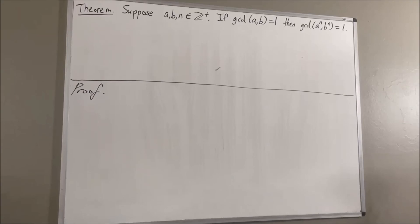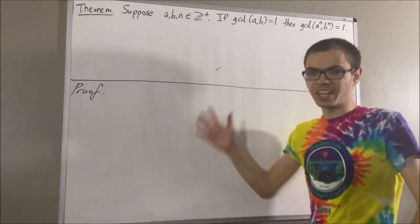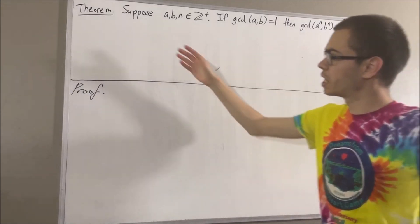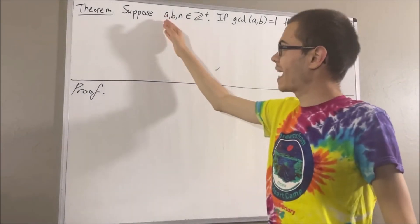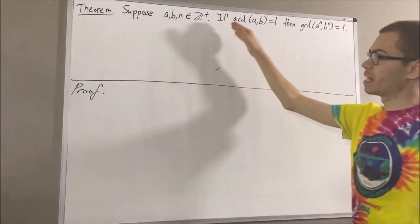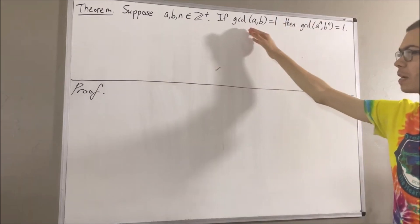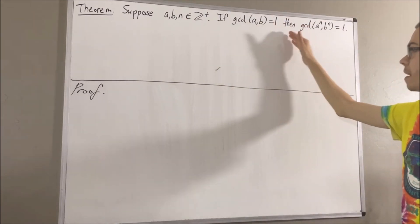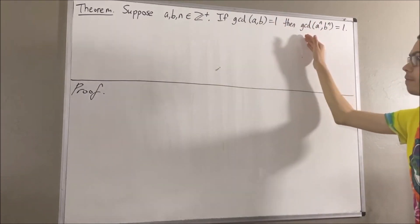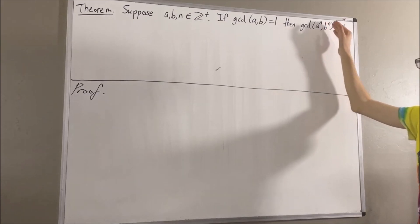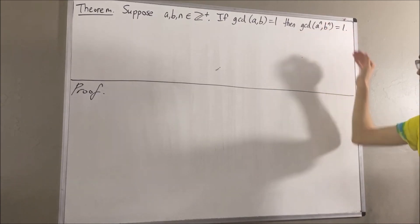Hello! In this video, we are going to prove the following theorem. Suppose a, b, and n are positive integers. If the greatest common divisor of a and b is equal to 1, then the greatest common divisor of a to the power of n and b to the power of n is equal to 1.